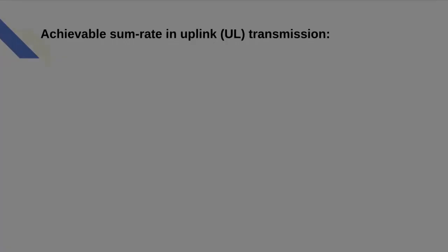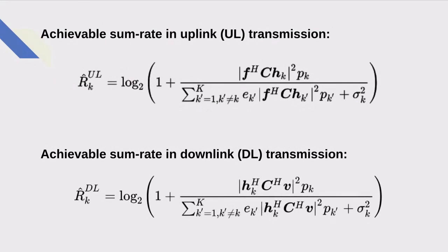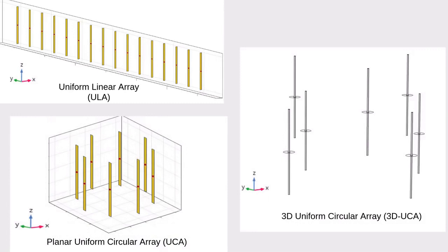In this paper, we investigate the effect of mutual coupling on the sum rate of NOMA system in both uplink and downlink transmissions, then mutual coupling is also compensated. Different antenna geometries and configurations, such as uniform linear array, planar uniform circular array and 3D uniform circular array, are implemented at the base station.